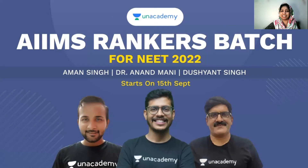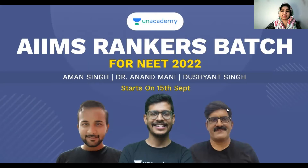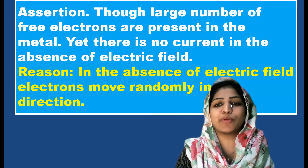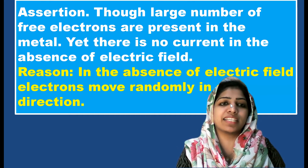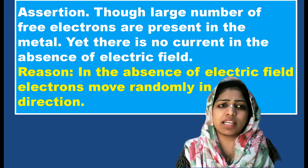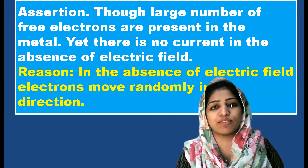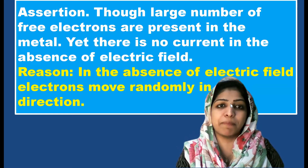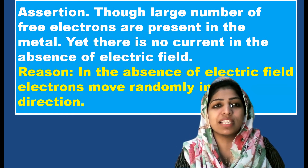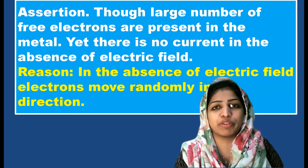We are going to discuss Current Electricity in the chapter of assertion reasoning questions. Question number one: though a large number of free electrons are present in a metal, yet there is no current in the absence of an electric field.